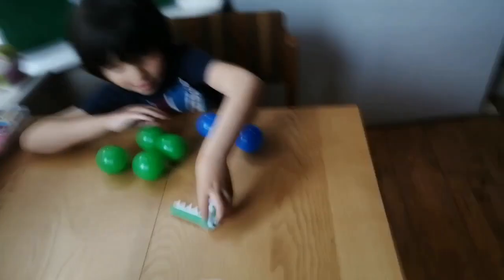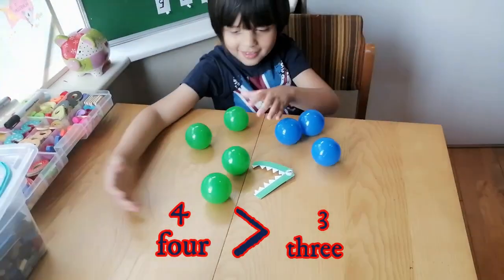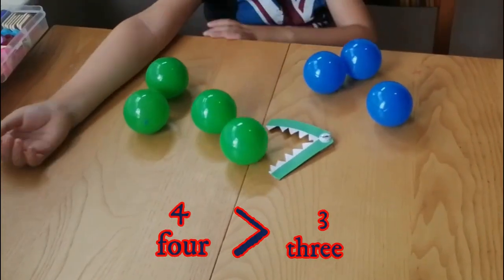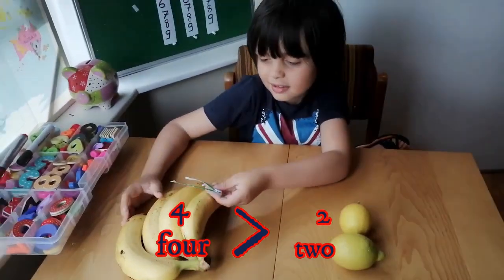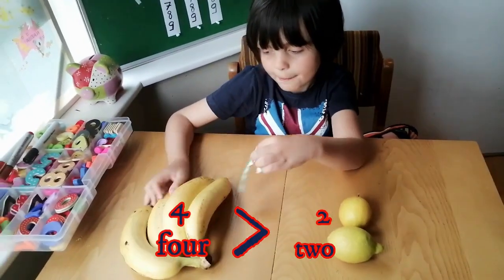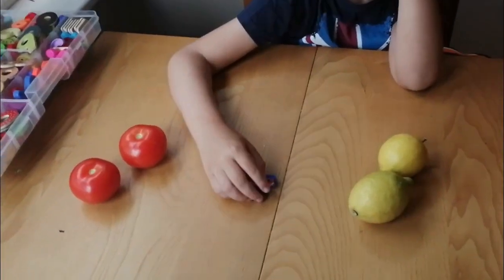So the crocodile is going to eat which color? The green. The crocodile is going to eat the green? Yeah. Which one do you have more? Four bananas. Four bananas. So the crocodile is going to eat? Four bananas. Oh, equals. They're equal.